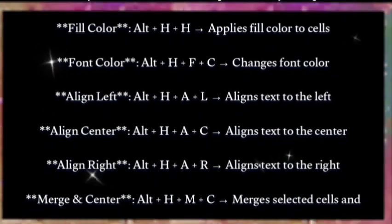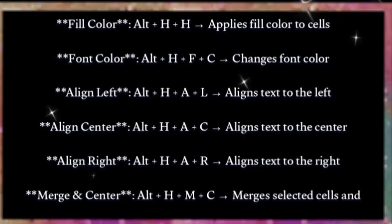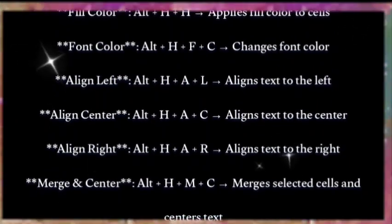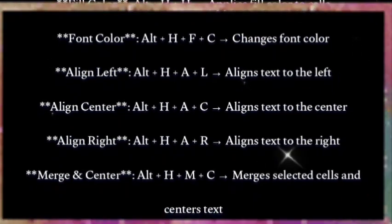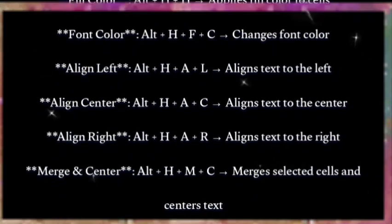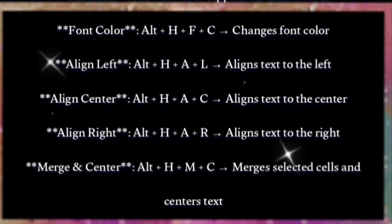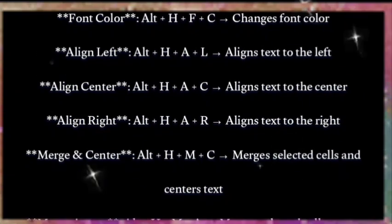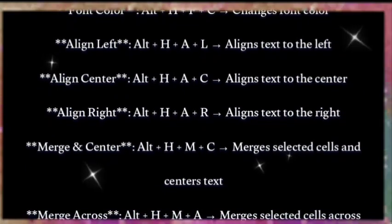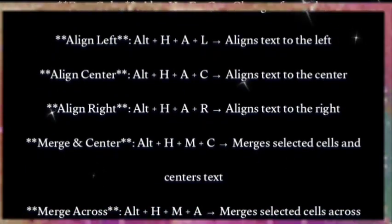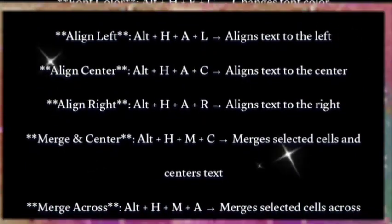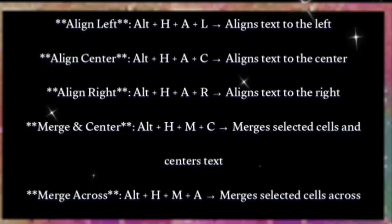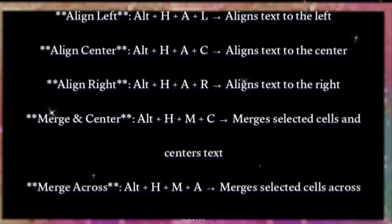Align center: Alt+H+A+C — aligns text to the center. Align right: Alt+H+A+R — aligns text to the right. Merge and center: Alt+H+M+C — merges selected cells and centers text.